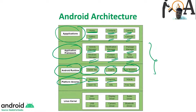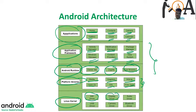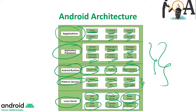Below the Android Runtime, Platform Libraries are present, which include Media, Graphics, SQLite, OpenGL, SSL, and FreeType. At the bottommost position is the Linux Kernel, which is the heart of Android architecture, containing Wi-Fi driver, Display driver, Audio driver, Bluetooth driver, Camera driver, and USB driver. These are the various components of Android architecture, arranged layer by layer.